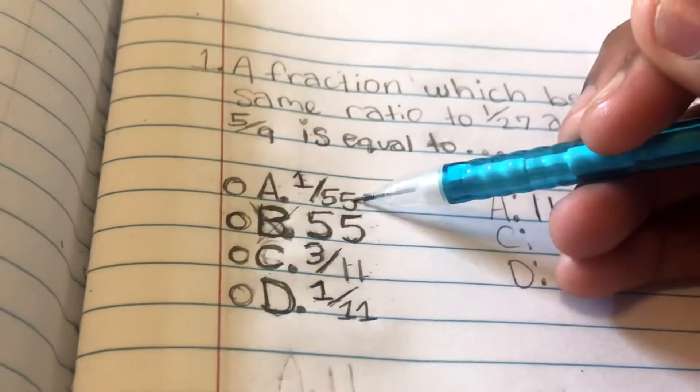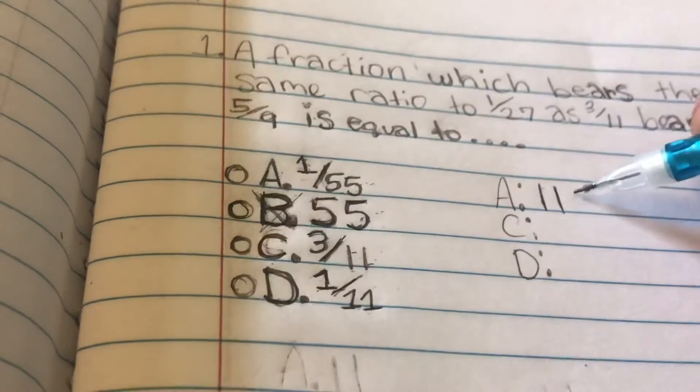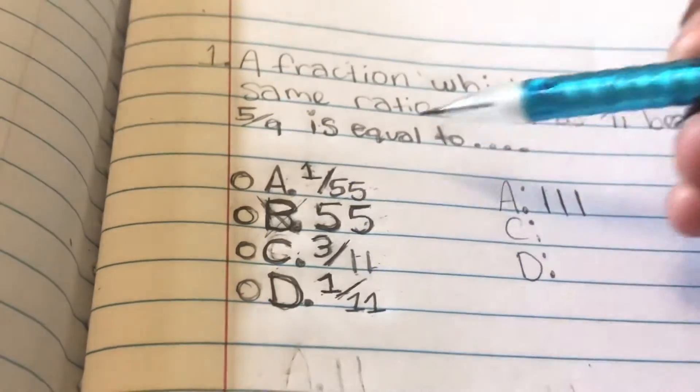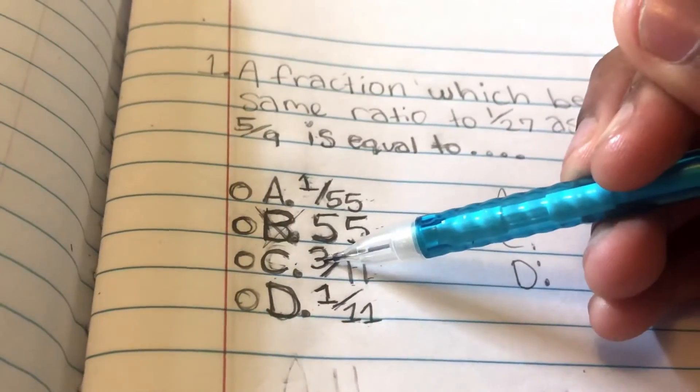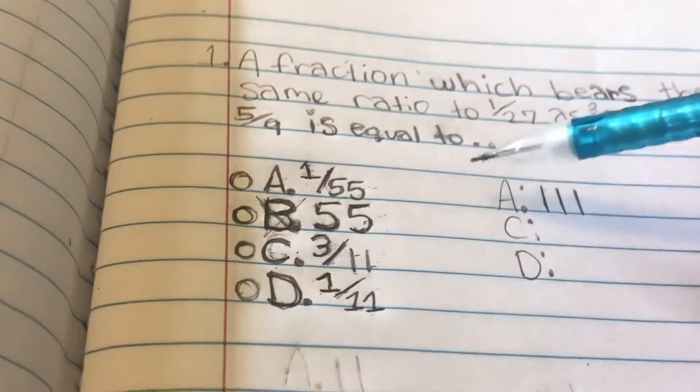We look at the 55. We see 55 for B, but that's already marked out, so we can still put a tally mark for that too. Now we go ahead and go over to C. It has three in the numerator, but nothing else on the multiple choice answers has three, so we can just leave that alone.